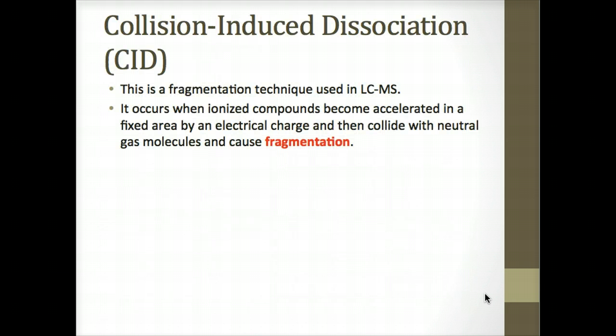Collision-induced dissociation is what we've been talking about in each one of these techniques. As we have seen in slides depicting types of ionization, collision-induced dissociation is a fragmentation technique used in liquid chromatography mass spec, mass spec, and mass spec. And tandem or ion trap mass spec application occurs when ionized compounds become accelerated in a fixed area by an electrical charge and then collide with neutral gas molecules like molecular nitrogen or argon or helium and cause fragmentation. In collision-induced dissociation, fragmentation is much less energetic than with electron ionization. Collision-induced dissociation can occur in the source and in the mass analyzer. It occurs before mass detection.